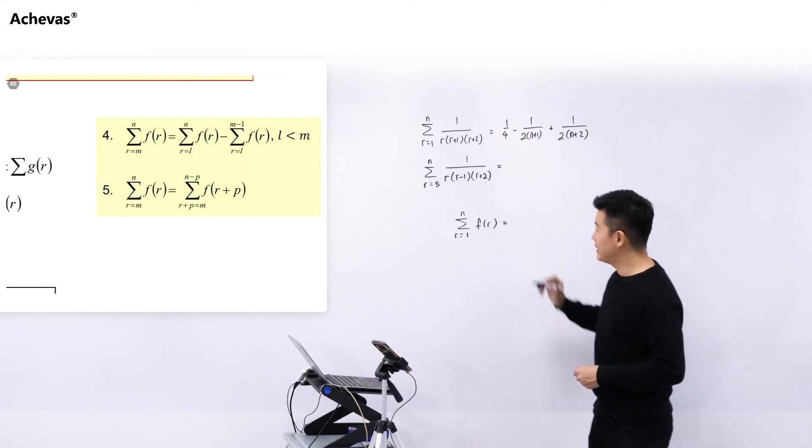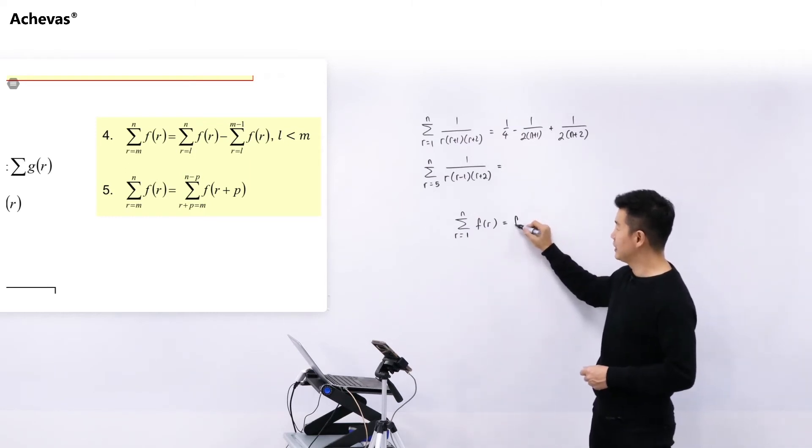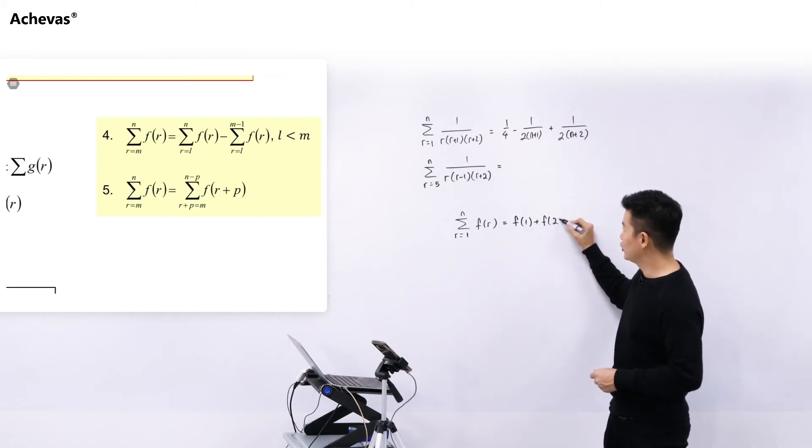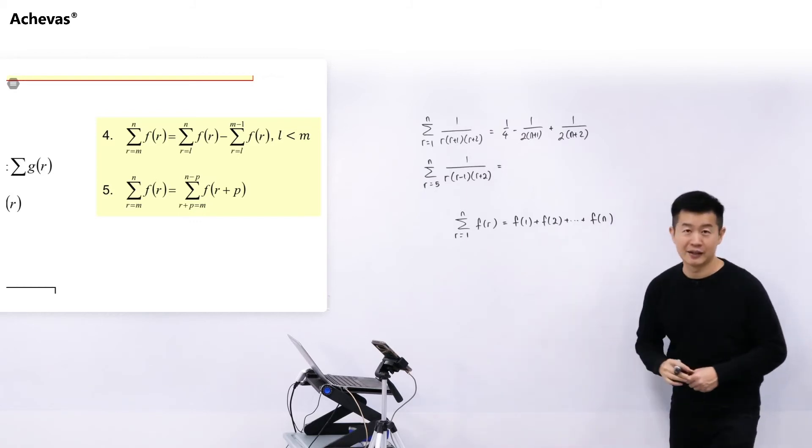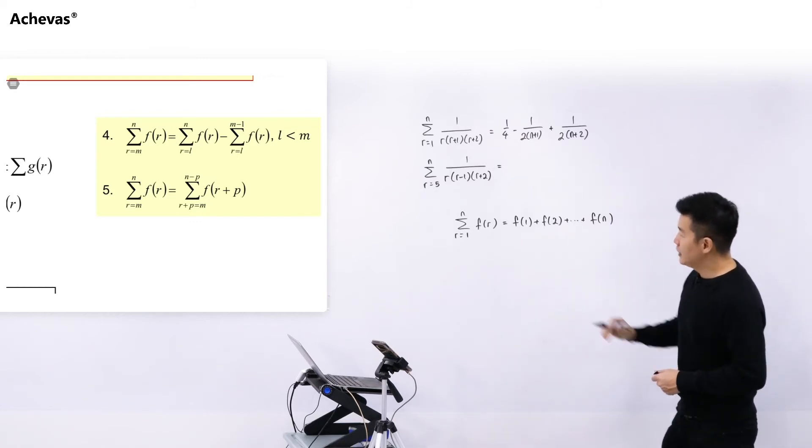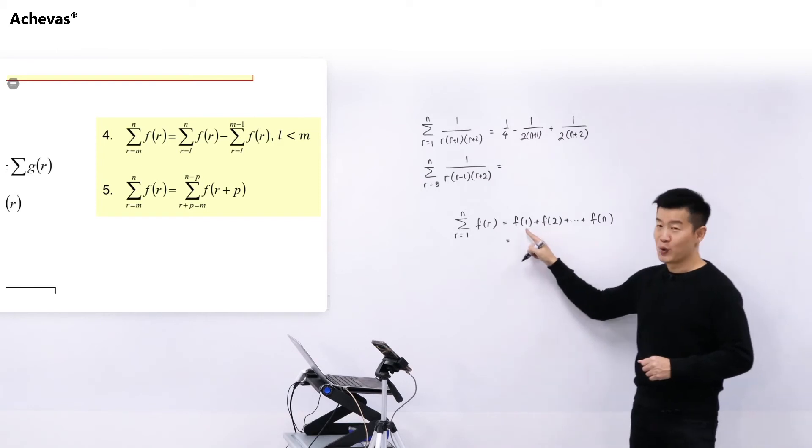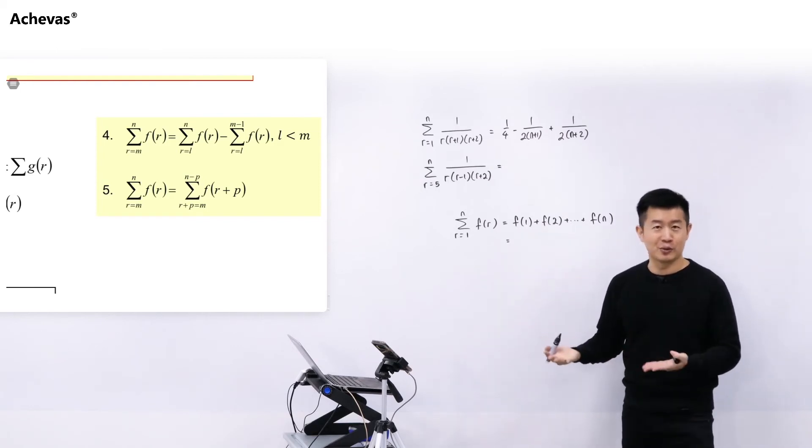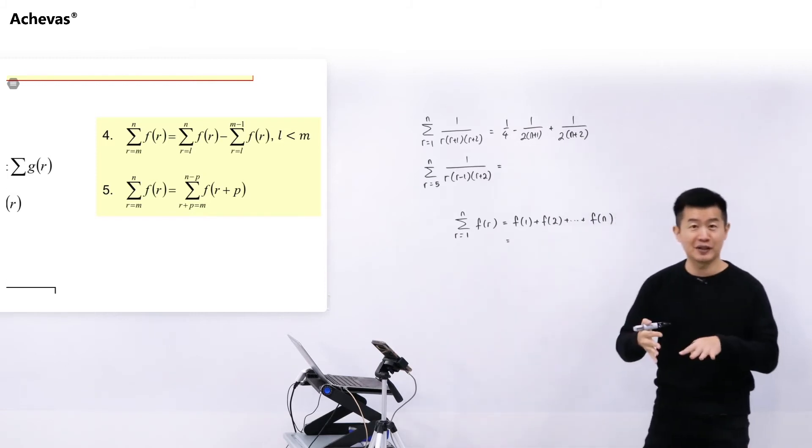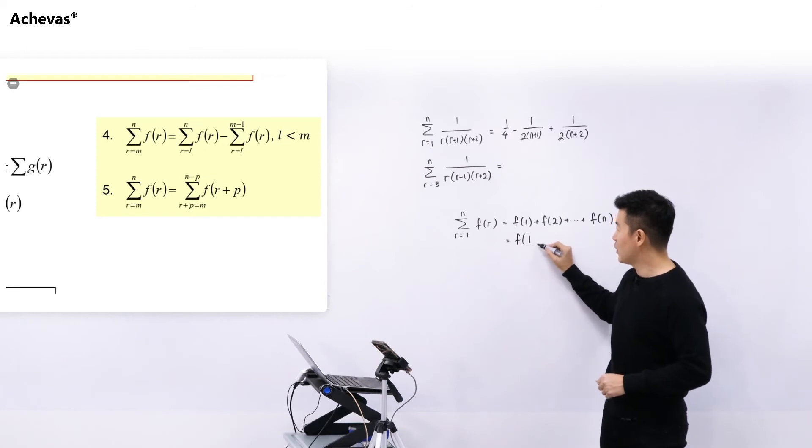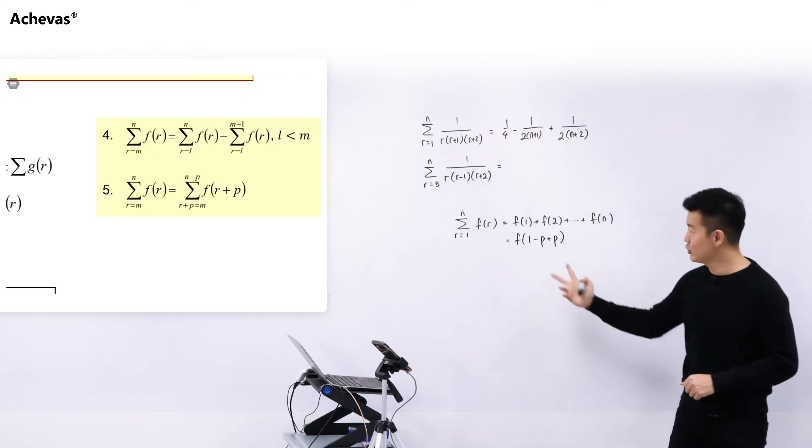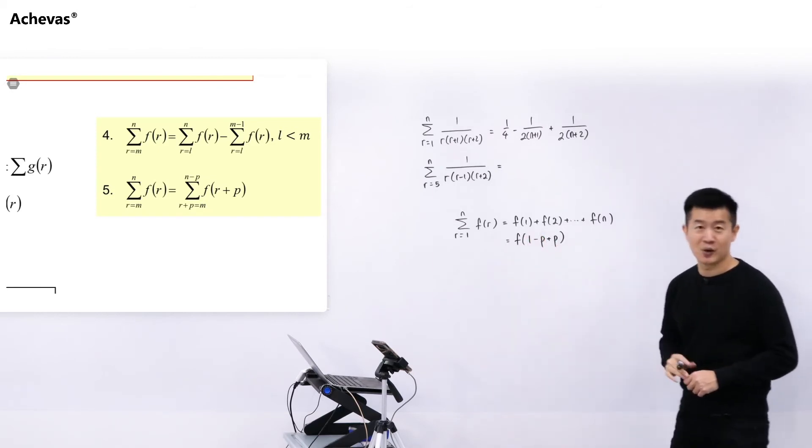Okay, so if I were to expand this summation we are going to be getting F1 plus F2 plus all the way until FN. And if I were to just do a bit of algebraic manipulation to 1, just like how you guys have been doing it in secondary school for completing squares, sometimes you just add a number you minus off the number, the expression actually remains exactly the same. So we are going to take 1 minus P, for example. If I were to minus P then we need to plus P so that this is still going to be 1.